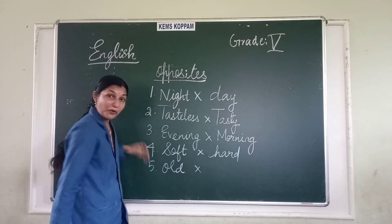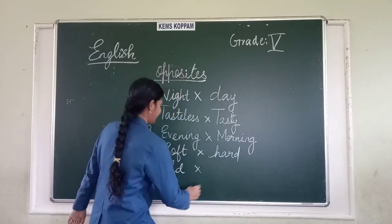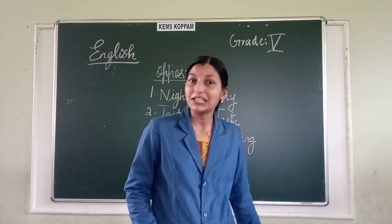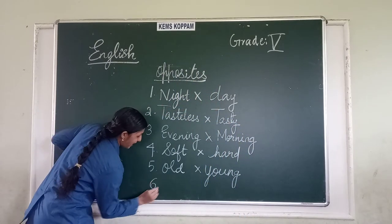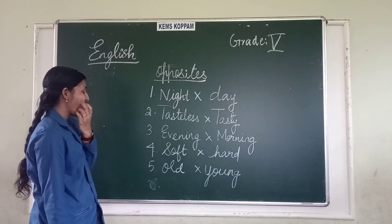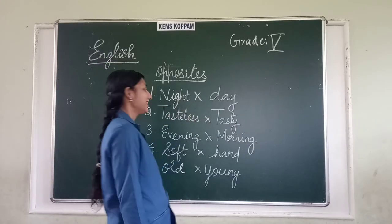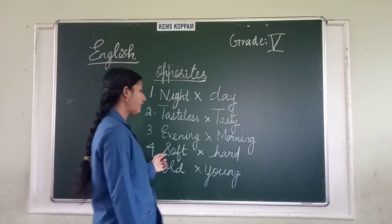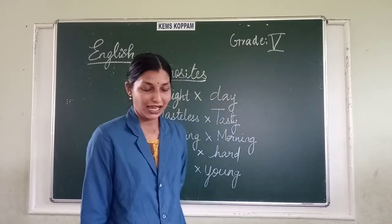Fifth: 'old' — the opposite is 'young.' The bridegroom in the story was very young, not old. His mother-in-law was old. So the five opposites we discussed today are: night/day, tasteless/tasty, evening/morning, soft/hard, and old/young.